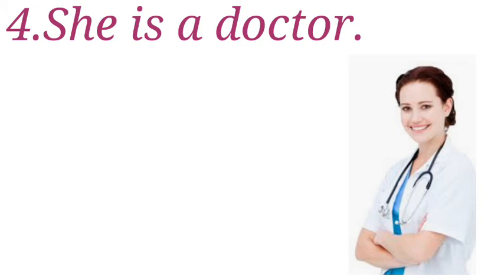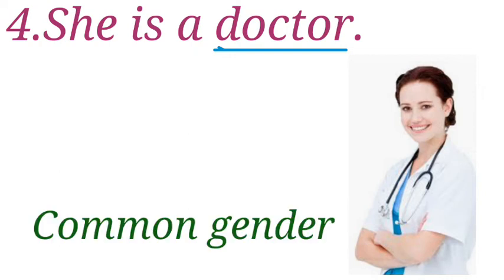See the next sentence: She is a doctor. In this sentence, doctor is representing a noun — it is a naming word. But it is also a gender. What gender is it? It is common gender. Common gender is important. If we learn the definition briefly, it will be easy to learn.